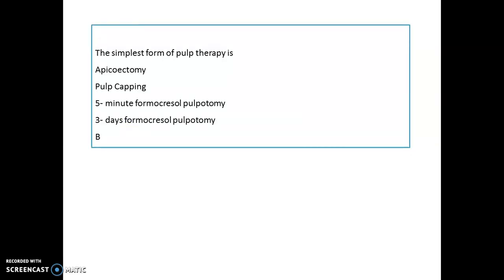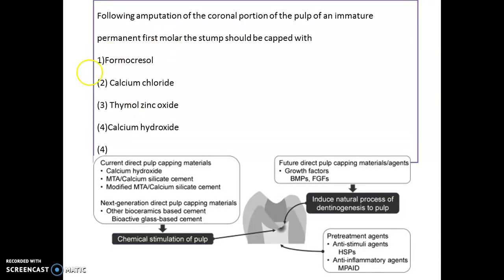Which is the simplest form of pulp therapy? Pulp capping is the simplest form of pulp therapy. We have two types: direct and indirect pulp capping. Remember, according to the American Academy of Endodontists, the name 'indirect pulp capping' has been changed to 'indirect pulp therapy.'